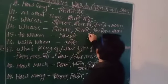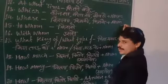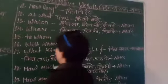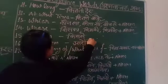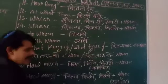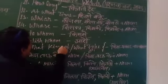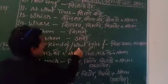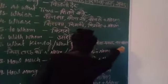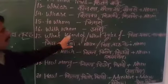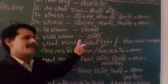Next word is 'To whom' — 'To whom' means Kiske. Then 'With whom' means Kiske Saath. Then the next word is 'What kind of' or 'What type of' — these mean Kis prakar ka, plus a noun. So 'what kind of' and 'what type of' both translate to Kis prakar ka followed by a noun.